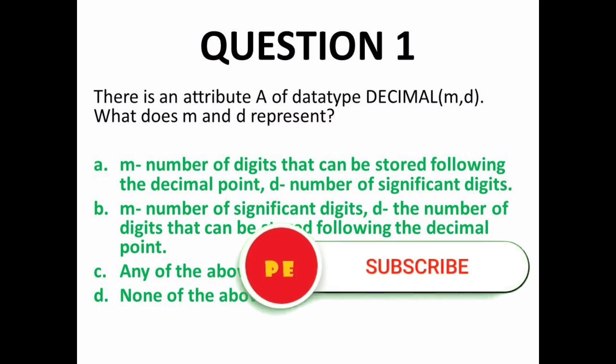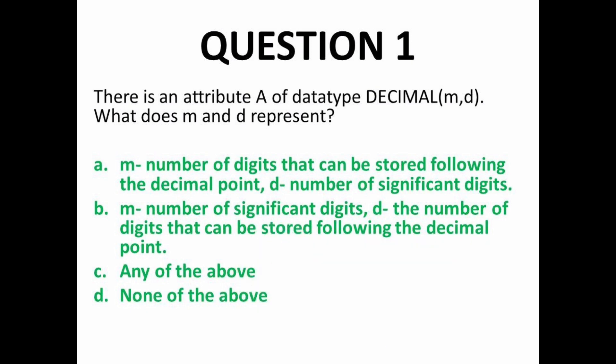First MCQ: there is an attribute of data type DECIMAL(M, D) — what does M and D represent here? Attribute A means a column in a table, and its data type is DECIMAL. Now what do M and D mean? One option given is that M is the number of digits that can be stored following the decimal point. In that column we can store decimal number types.